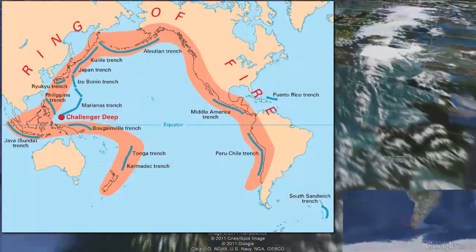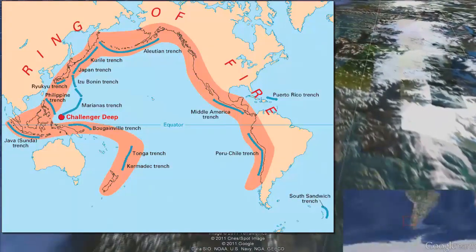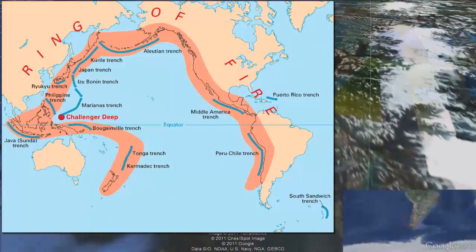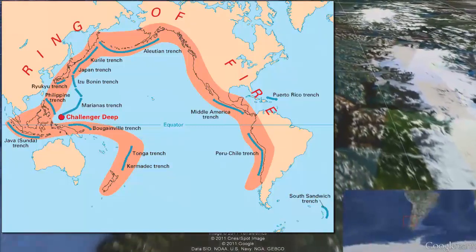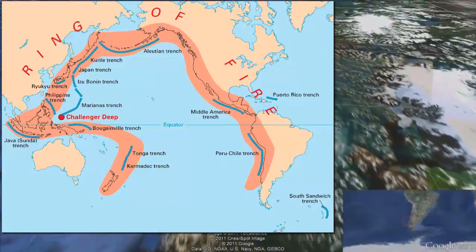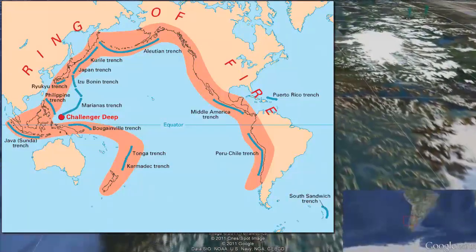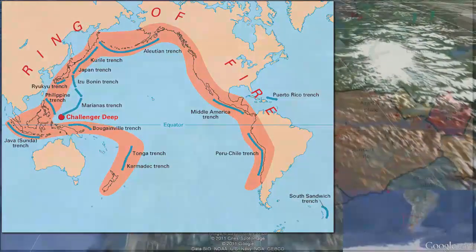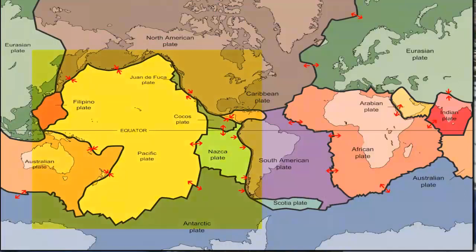This video depicts global earthquake activity from January 1st to December 10th of 2011 along the infamous Ring of Fire, a horseshoe-shaped region roughly defined by the perimeter of the Pacific Ocean. This ring, also referred to as the Circumpacific Seismic Belt, is characterized by 90% of the world's earthquakes, 75% of the world's active and dormant volcanoes, and numerous tsunamis. These geological events are caused by the collisions of lithospheric plates, as shown by this USGS color map in which the Ring of Fire is highlighted in yellow.